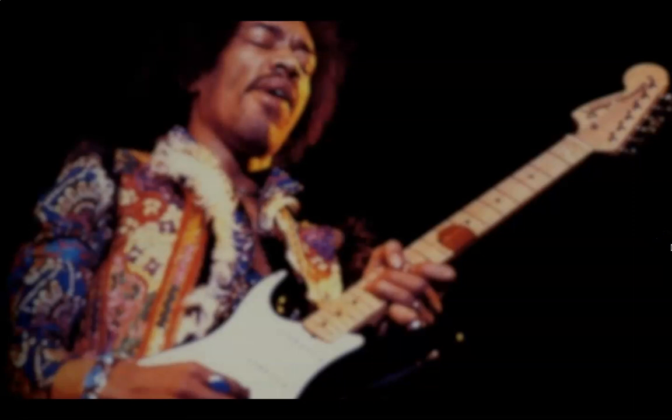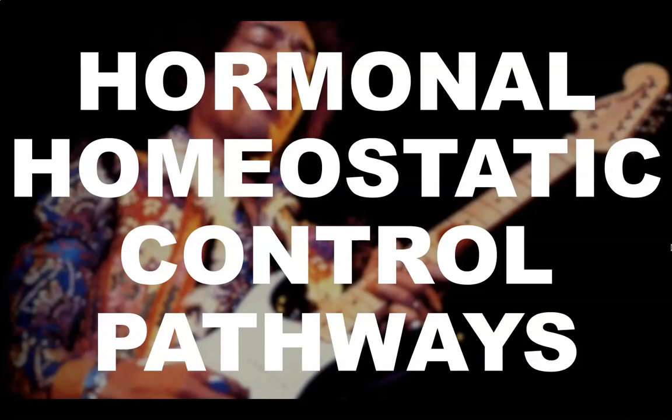Hello and welcome to today's video lesson on hormonal homeostatic control pathways. We've been talking about homeostasis recently, remember that it comes from Greek words meaning same and steady, referring to any process that living things use to actively maintain fairly stable conditions necessary for survival. You can see Jimi Hendrix in the background - there's a bit of a Jimi Hendrix theme to this video. But first up, let's get into the goals.